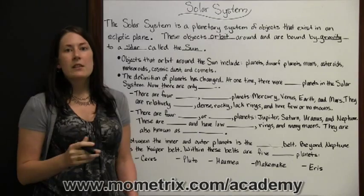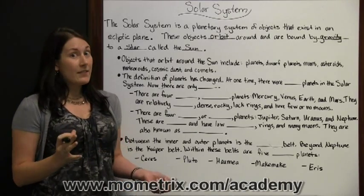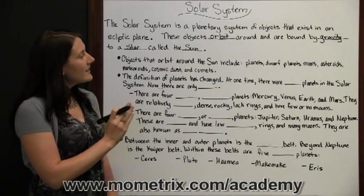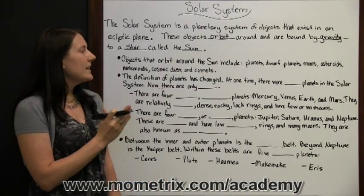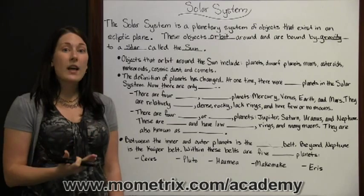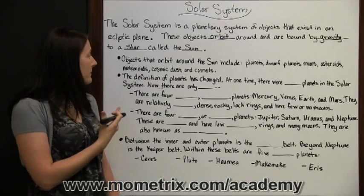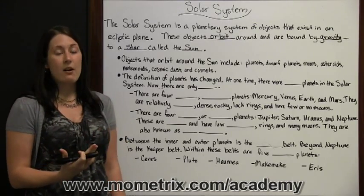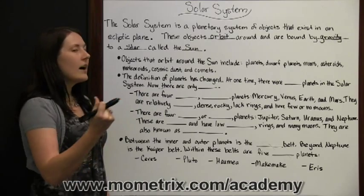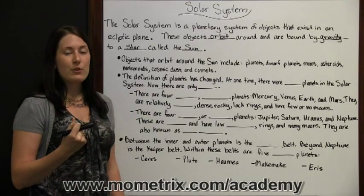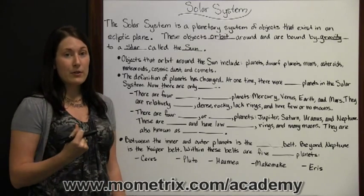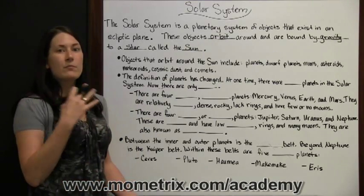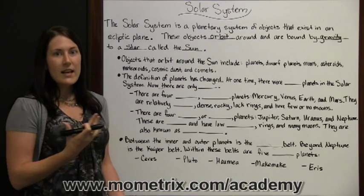There are lots of objects that orbit around the Sun. They include planets, dwarf planets, moons, asteroids, meteoroids, cosmic dust, and comets. All of these are caught in the Sun's pull of gravity and they orbit around the Sun.